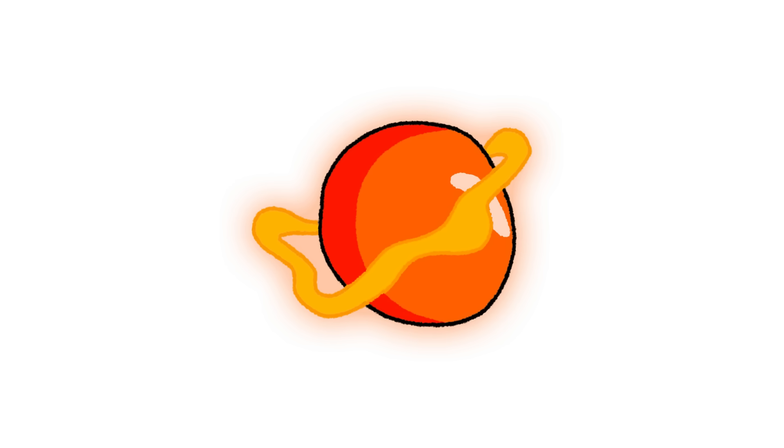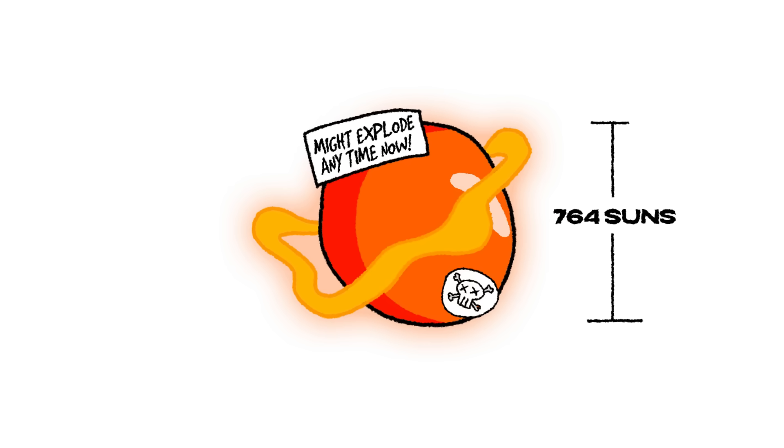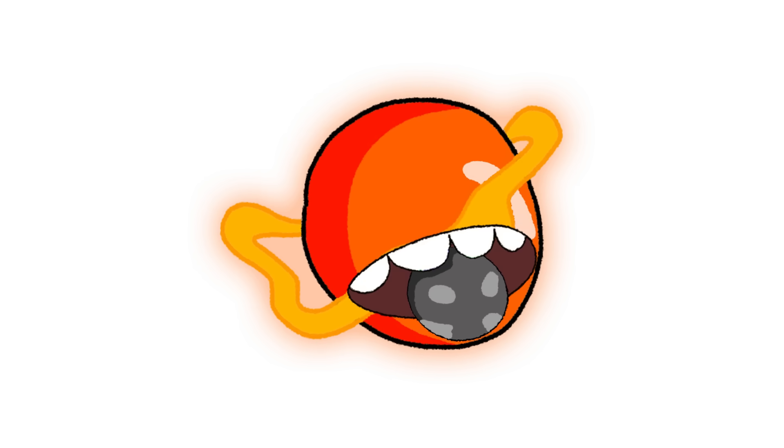Now let's talk about Betelgeuse, a star so big, so unstable, that it might explode in our lifetime. This red supergiant is an absolute monster, stretching 764 times wider than our sun. If we put it in the sun's place, it wouldn't just swallow Mercury and Venus, it would completely engulf Earth, Mars, and Jupiter too.